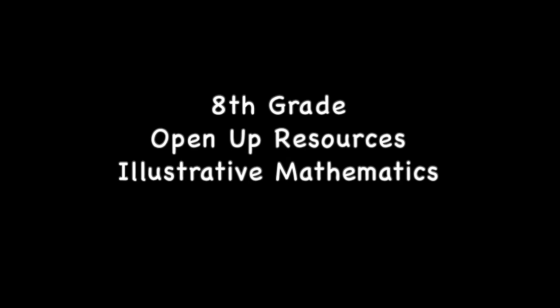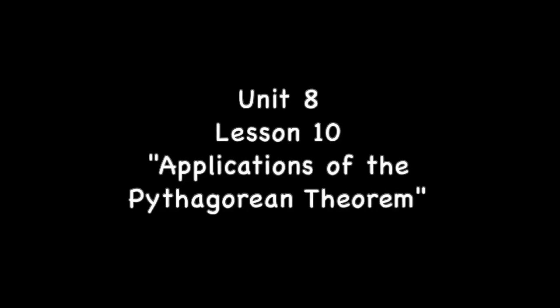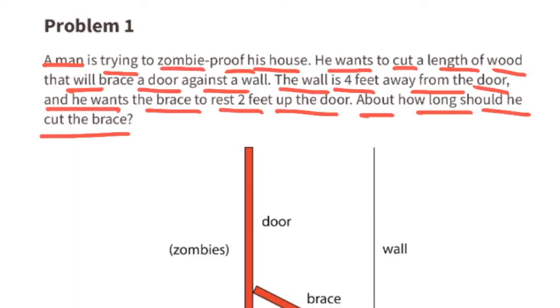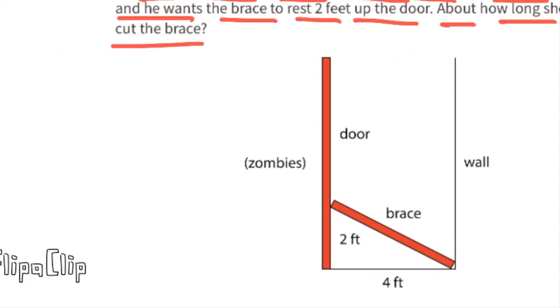Eighth grade Open Up Resources Illustrative Mathematics, Unit 8 Lesson 10: Applications of the Pythagorean Theorem. Problem number one: a man is trying to zombie-proof his house. He wants to cut a length of wood that will brace a door against a wall. The wall is four feet away from the door, and he wants the brace to rest two feet up the door. About how long should he cut the brace? The brace can be considered the hypotenuse of a right triangle.